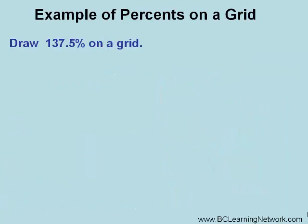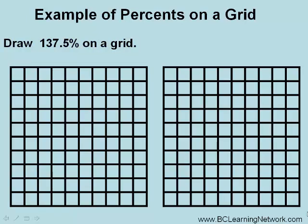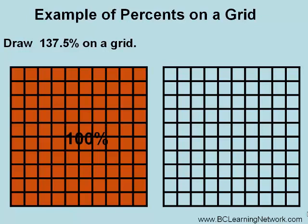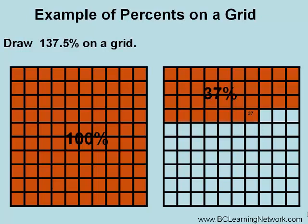Let's draw a hundred and thirty-seven point five percent on a grid. We need to start with two one-hundred-square-unit grids. We would fill in the first one completely, representing one hundred percent. On the second grid, we would fill in thirty-seven out of a hundred, representing thirty-seven percent. And finally, we would take one little square and fill in half of it, representing point five percent. So there we have it — one hundred and thirty-seven point five percent.